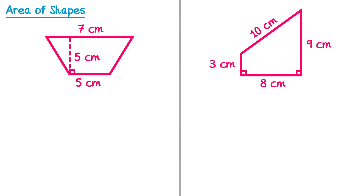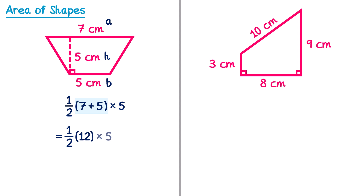Here are two more trapeziums for you to try. Let's start by labelling A, B, and H. A and B are the parallel sides, so that will be the 7 and the 5, and H is the height, which is also 5. Then we use the formula: one half, then a bracket. Inside the bracket we add A and B — so 7 and 5 — and then multiply by the height, which is 5. To do this: one half, we add 7 and 5 which is 12, and then multiply by 5. One half of 12 is 6, so 6 multiplied by 5 is 30. So the answer is 30cm squared.